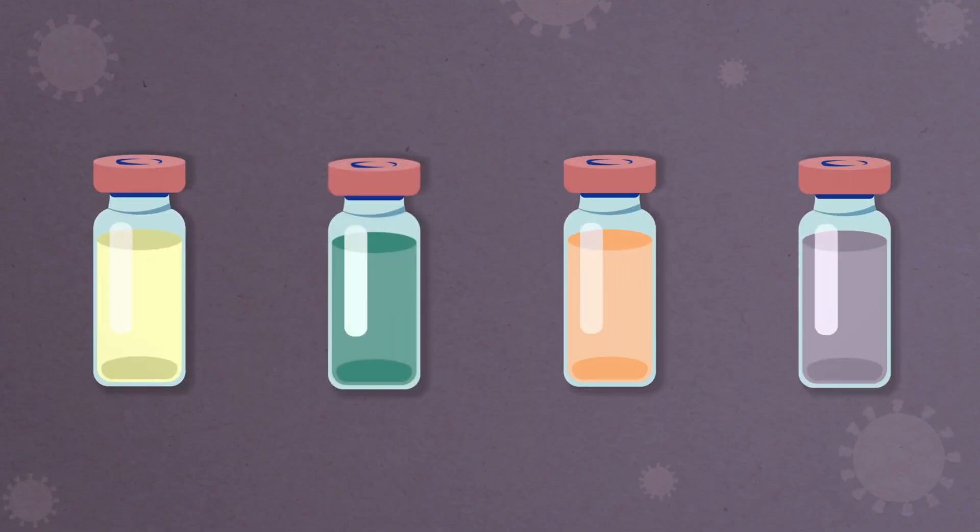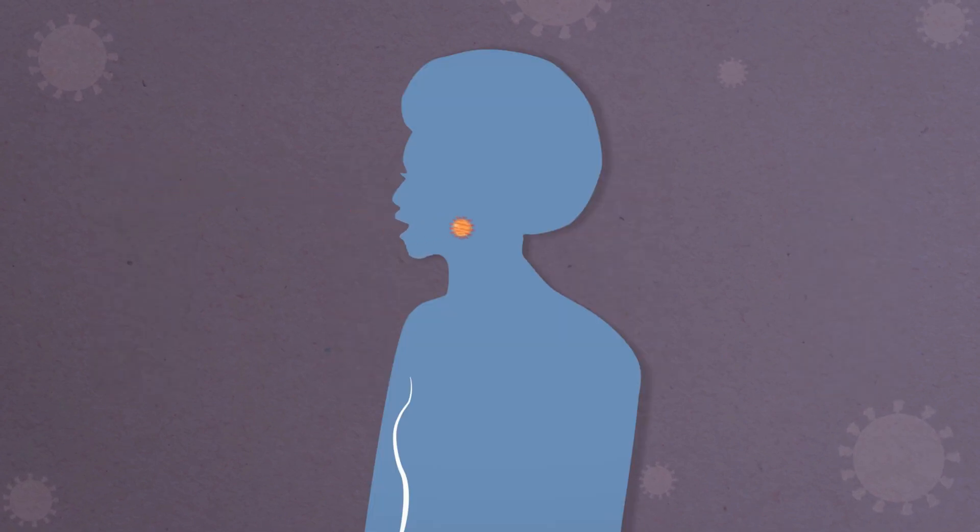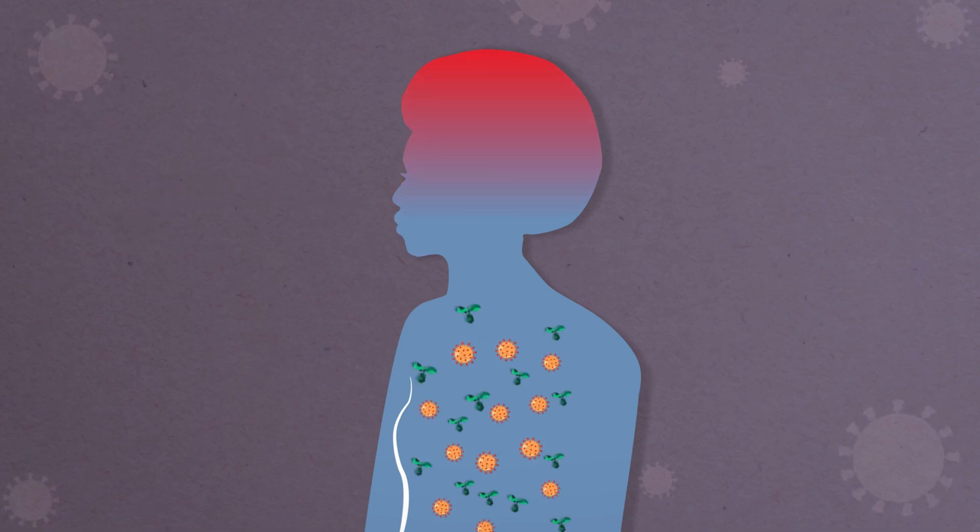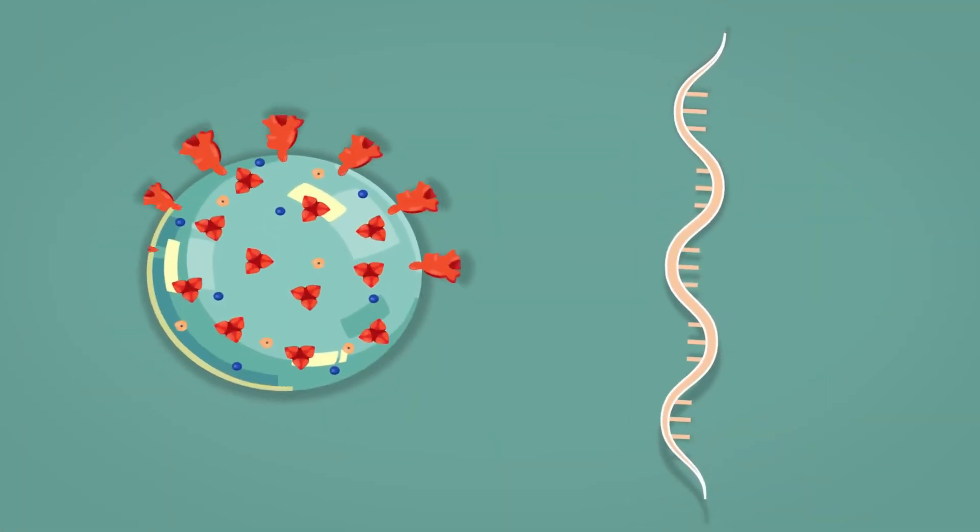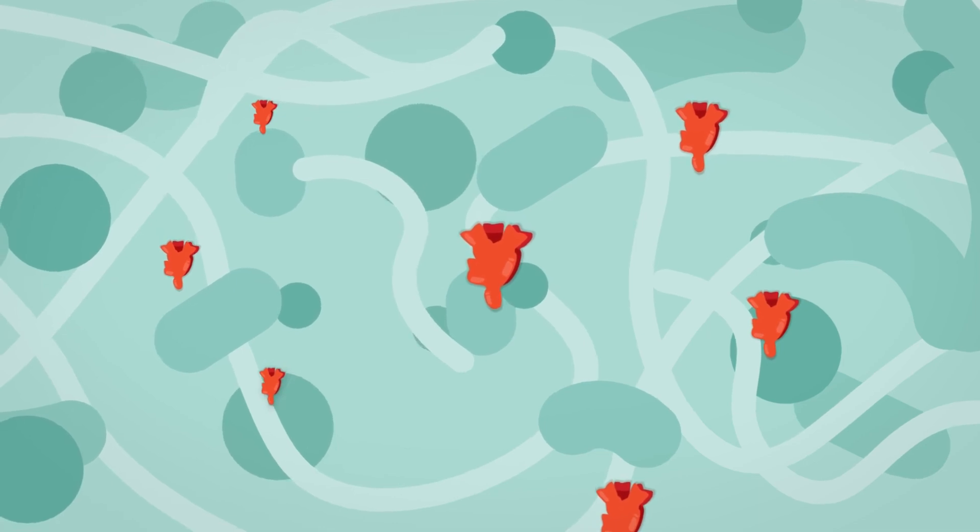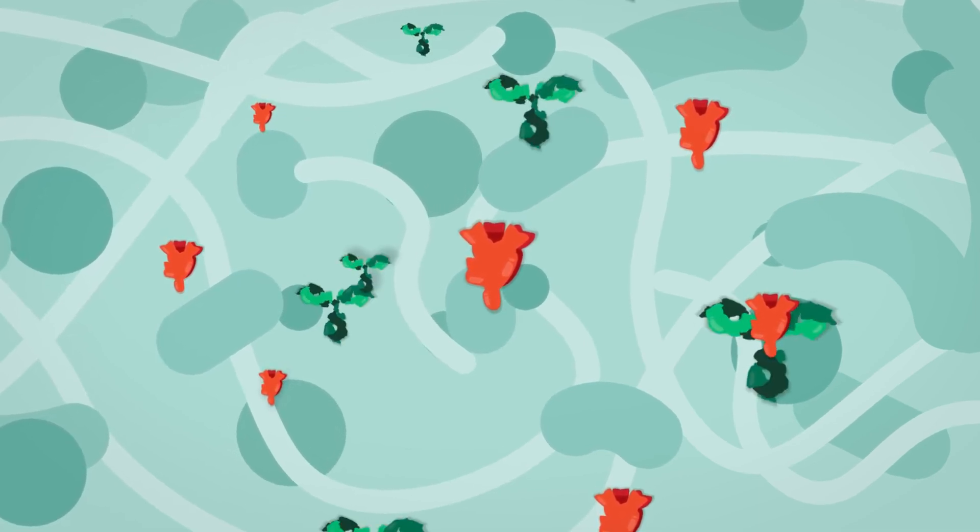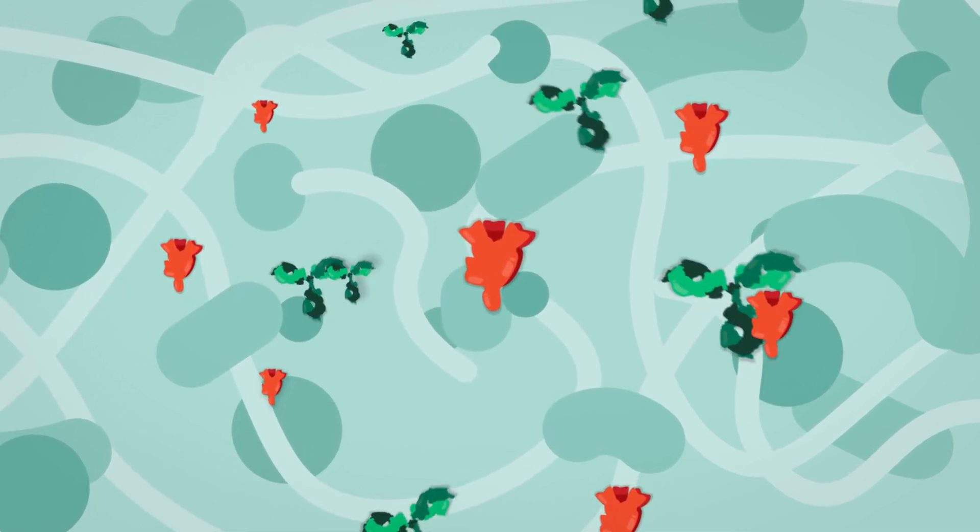COVID-19 vaccines help our bodies develop immunity to the virus that causes COVID-19 without us having to get the illness. Different types of vaccines work in different ways to offer protection. But with all types of vaccines, the body is left with a supply of memory T lymphocytes as well as B lymphocytes that will remember how to fight that virus in the future.